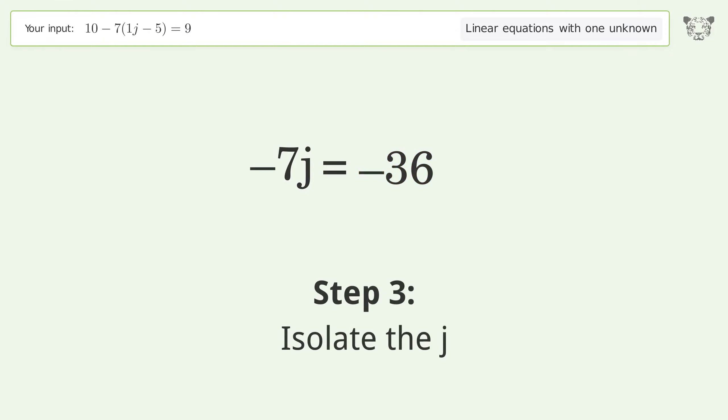Isolate the j. Divide both sides by negative 7. Cancel out the negatives.